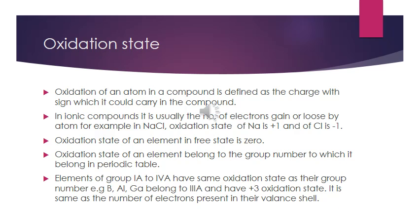Oxidation state of an atom in a compound is defined as the charge with sign which it would carry in the compound. In a free state, every element has an oxidation state of zero. In ionic compounds, the oxidation state is usually based on gain or loss of electrons. For example, in NaCl, sodium loses one electron so its oxidation state is +1, and chlorine gains one electron so its oxidation state is -1.